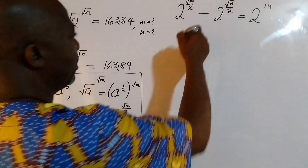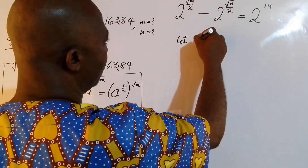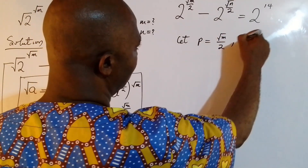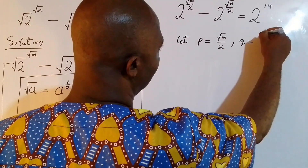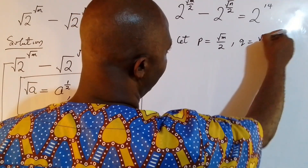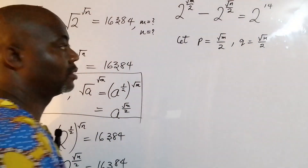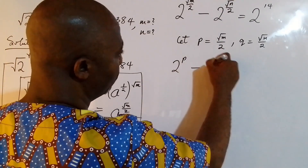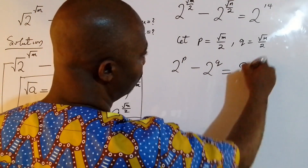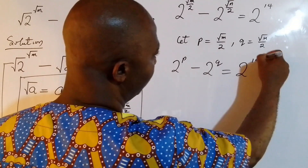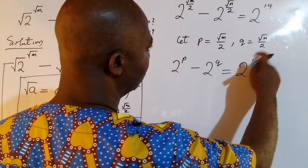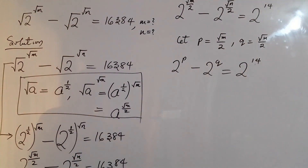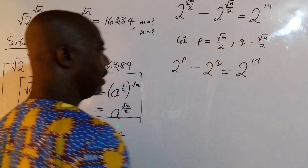Next, I let p equal to root m over 2, and q equal to root n over 2. So the equation becomes 2 to the power of p, minus 2 to the power of q, equals 2 to the power of 14.